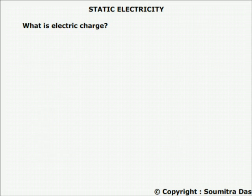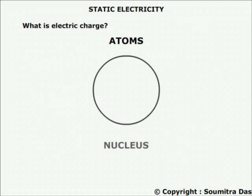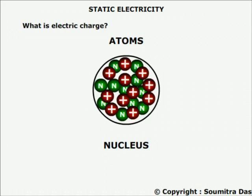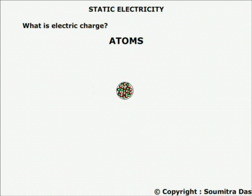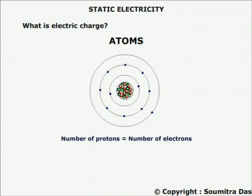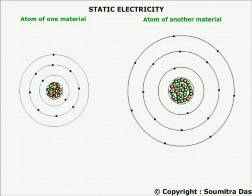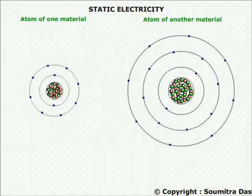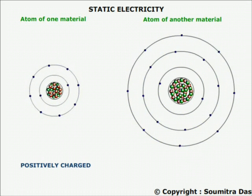What is electric charge? Every matter is made up of atoms. Atoms have a nucleus at the center containing positively charged protons and uncharged neutrons. The rest of the atomic space is occupied by negatively charged electrons. The number of protons and electrons are equal in an atom, keeping it neutral. When a material is stripped of its electrons by interaction with another material, the first material becomes positively charged and the second becomes negatively charged.